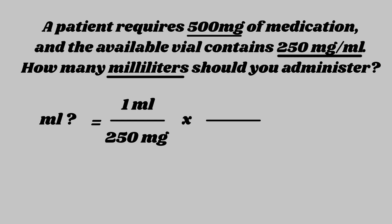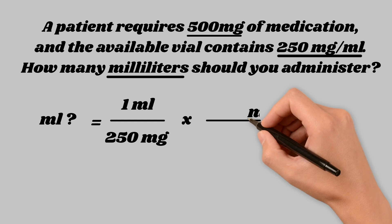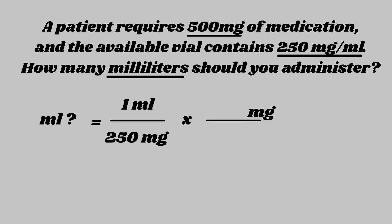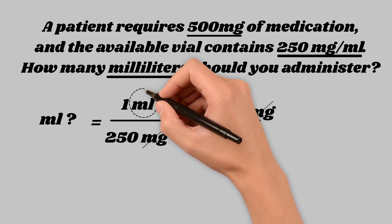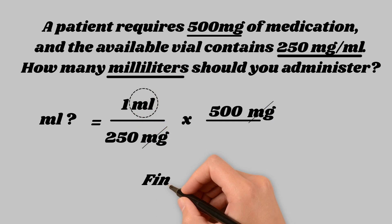How can we do this? We have 500 milligrams, which is what the patient requires. For dimensional analysis, if you want to cancel out units of measure, you have to put them on opposite sides of the equation. So if milligrams are on the bottom, when we multiply, the milligrams will have to be on top for them to cancel each other out. We'll put 500 milligrams on top and cancel out our milligrams. After we do our calculation, our final answer is 2 mLs.